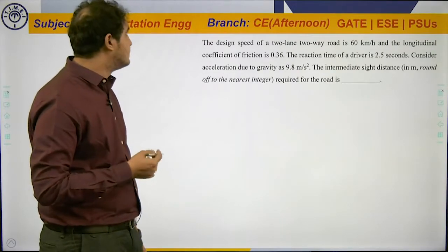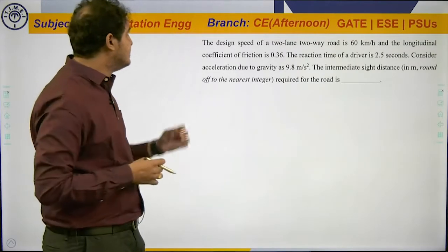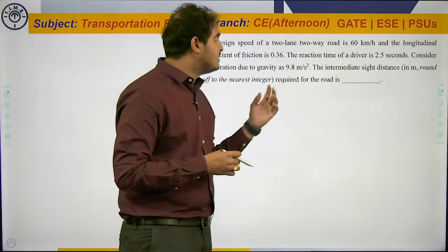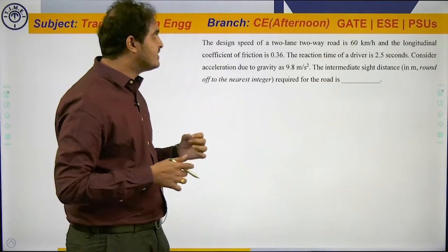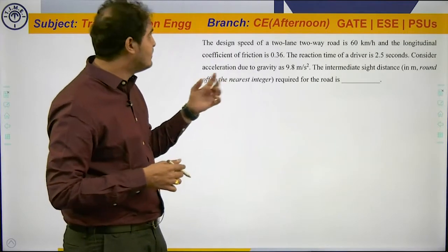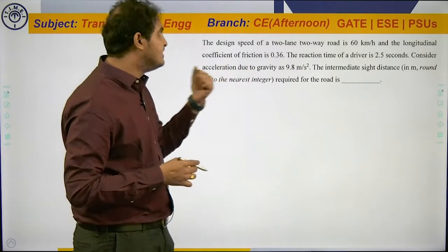The next question is on transportation engineering. It states: the design speed of a two-lane two-way road is 60 kmph, longitudinal coefficient of friction f is 0.36, reaction time of driver t is 2.5 seconds, and acceleration due to gravity g is given.